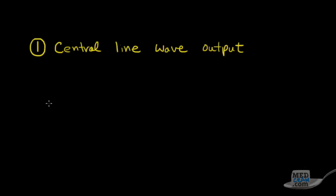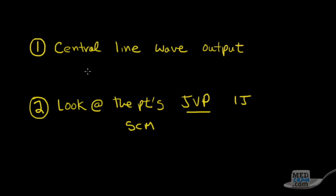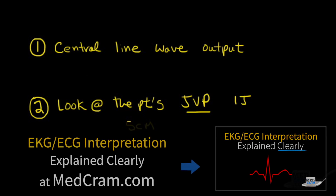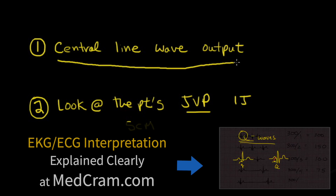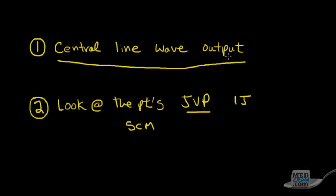To review, there are two ways you can look at a JVP. You can either look at the output from a central line that you've placed, or you can look at the patient's jugular venous pulse directly — the internal jugular vein. When they're lying down, you can look at that area around the sternocleidomastoid, or SCM, and observe the waveform. The rest of today's discussion focuses on the central line wave output, because that's one way we can actually look at and measure the waveform.